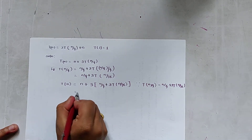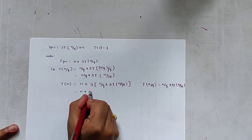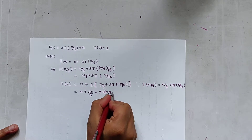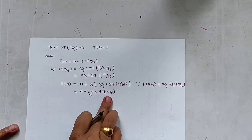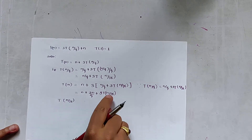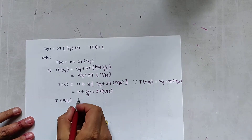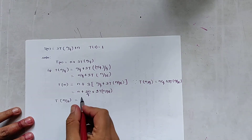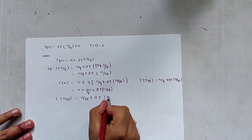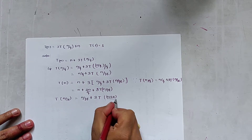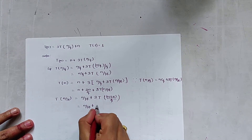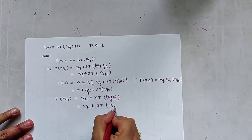Opening the braces, we get T(n) = n + 3n/4 + 9T(n/16). Again, we find T(n/16). Since we need n/16, n is converted to n/16, so T(n/16) = n/16 + 3T(n/64).